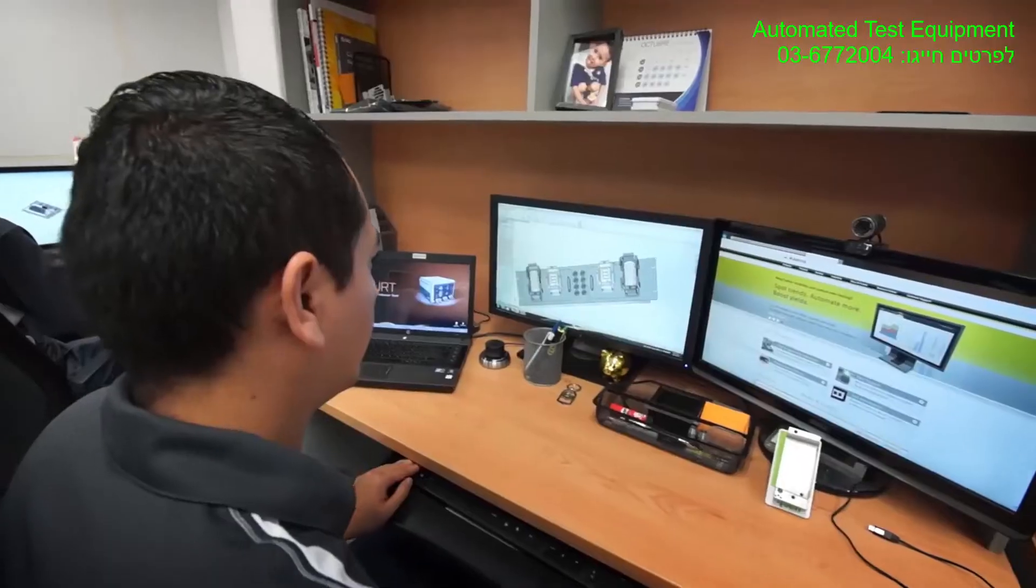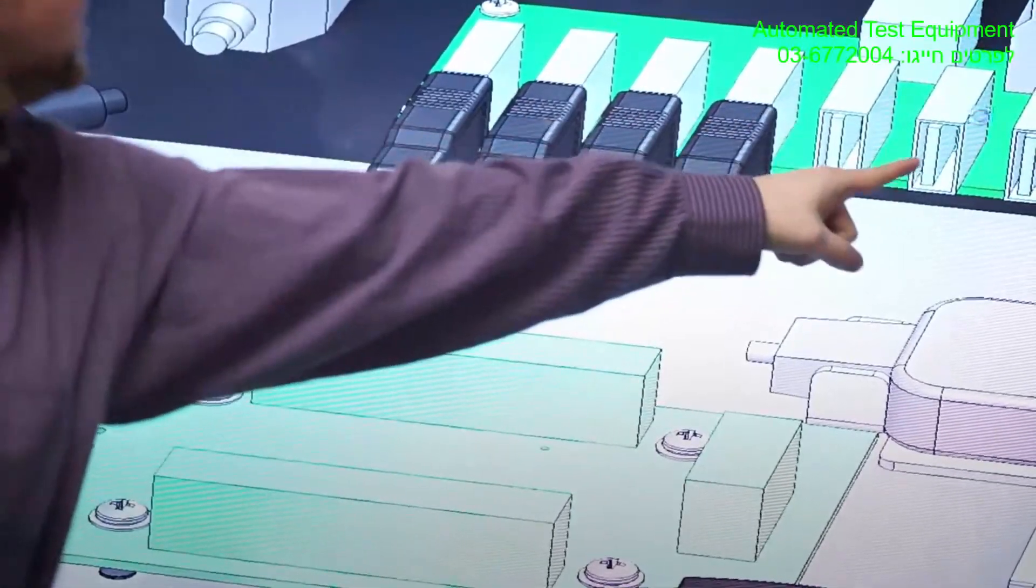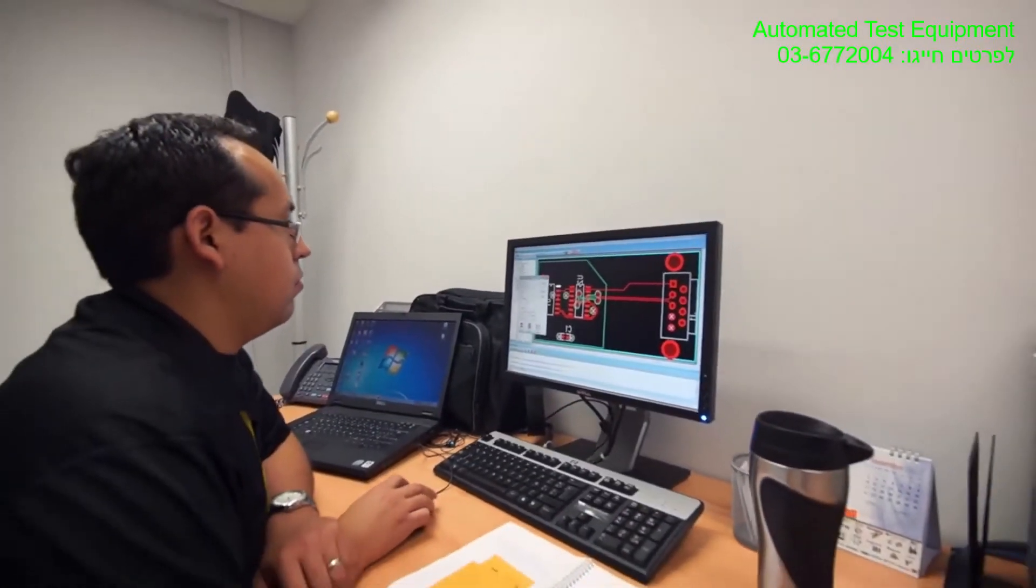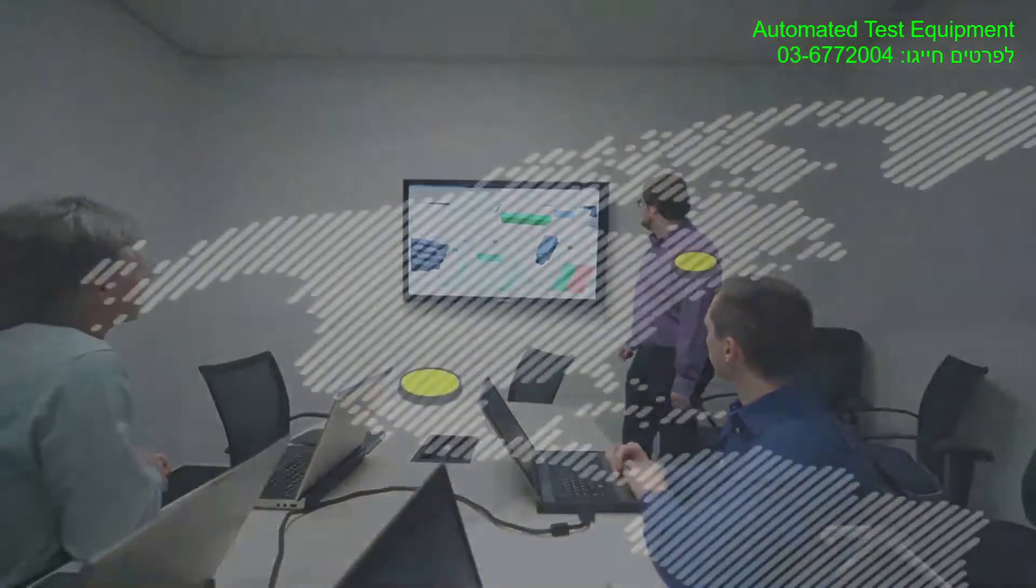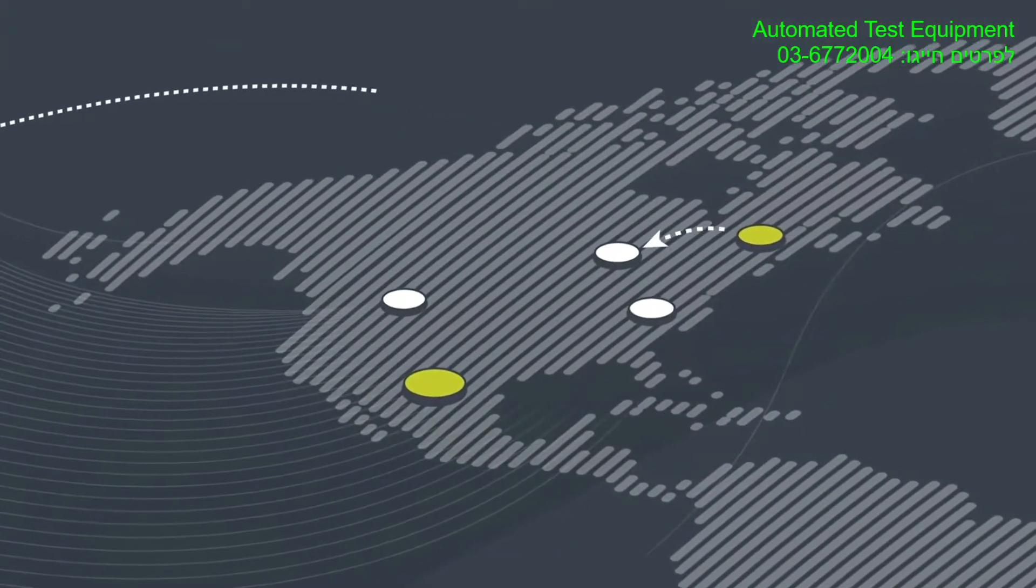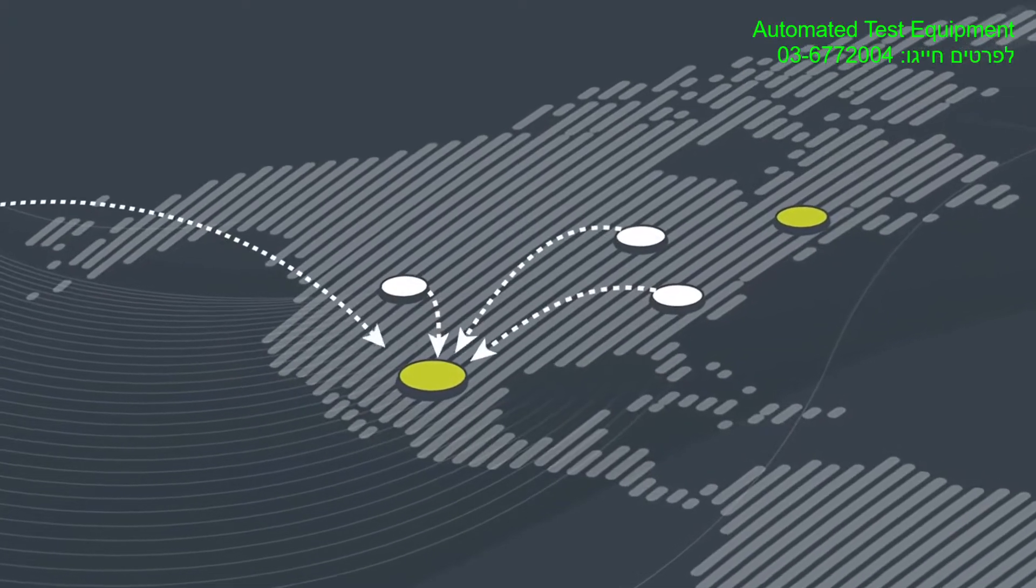We start with your test station design or one we collaborate on. Next, we launch our bill of material and material planning processes. Then we carefully source every part from our extensive network of suppliers and partners.